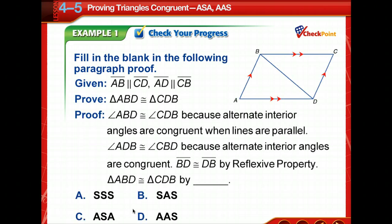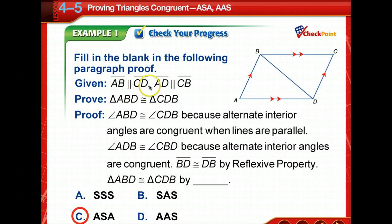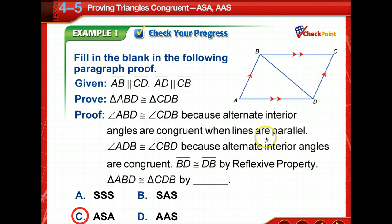Let's check your progress. Fill in the blank in the following paragraph proof. Pause the video for a moment, see what you think, and then come back and check your answer. Did you come up with angle-side-angle? We're given about two parallel lines — alternate interior angles, another set — and then by the reflexive property, BD. So we've got the one side that's included between the two angles.